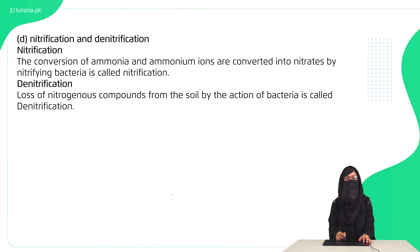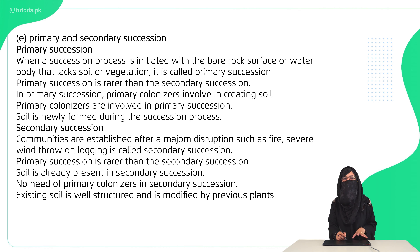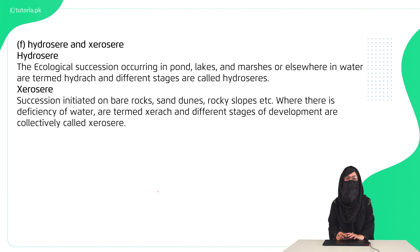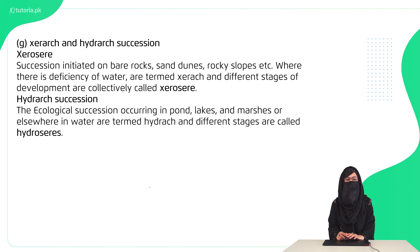Primary and secondary succession. Hydrosere is ecological succession that occurs in water bodies. Xerosere is succession that occurs in rocks or desert areas. Xerosere occurs in rocks or desert areas, while hydrosere succession occurs in ponds or lakes.